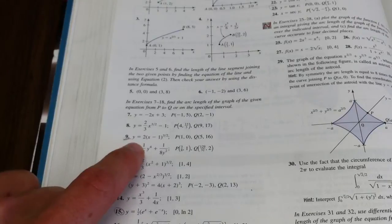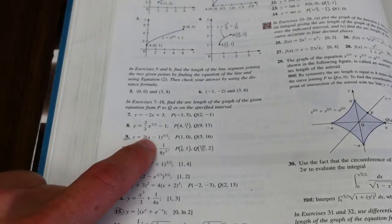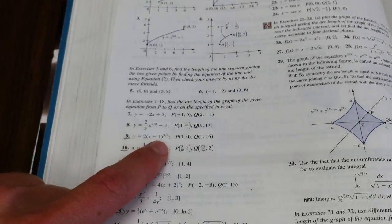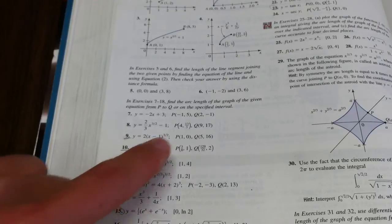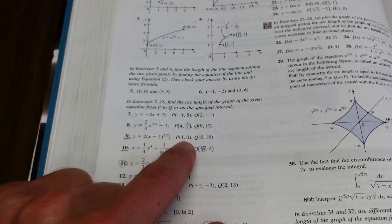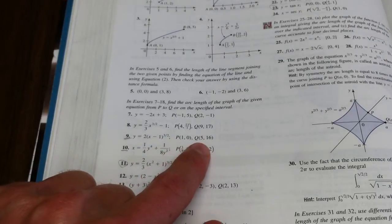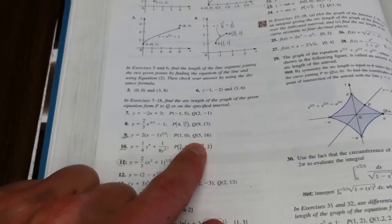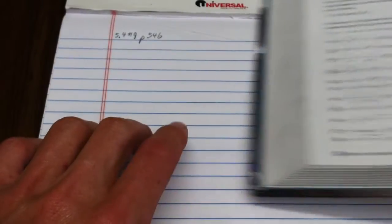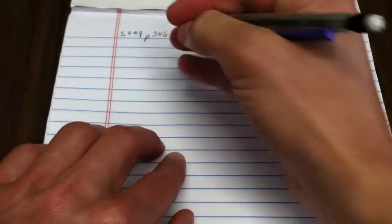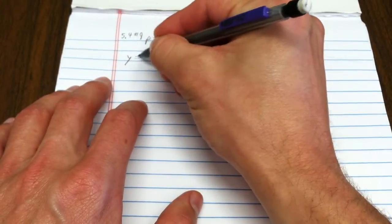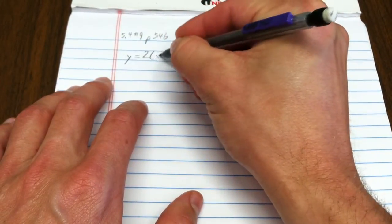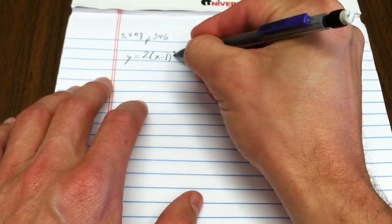We're on problem 9, where y equals 2 times (x - 1) to the 3/2 power, from the point (1, 0) to the point (5, 16). I have y equals 2(x - 1)^(3/2).